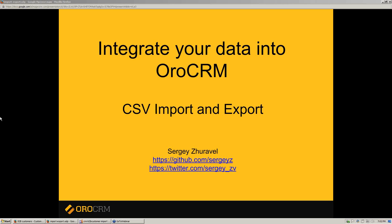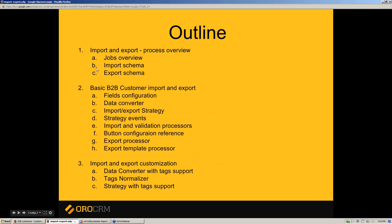In the first part, we will overview the import and export schema. The second part is related to import and export configuration for a configurable entity — as an example, we will use B2B customer. In the third part, we will do import and export customization; as a customization example, we will add tags to our entity in import and export.